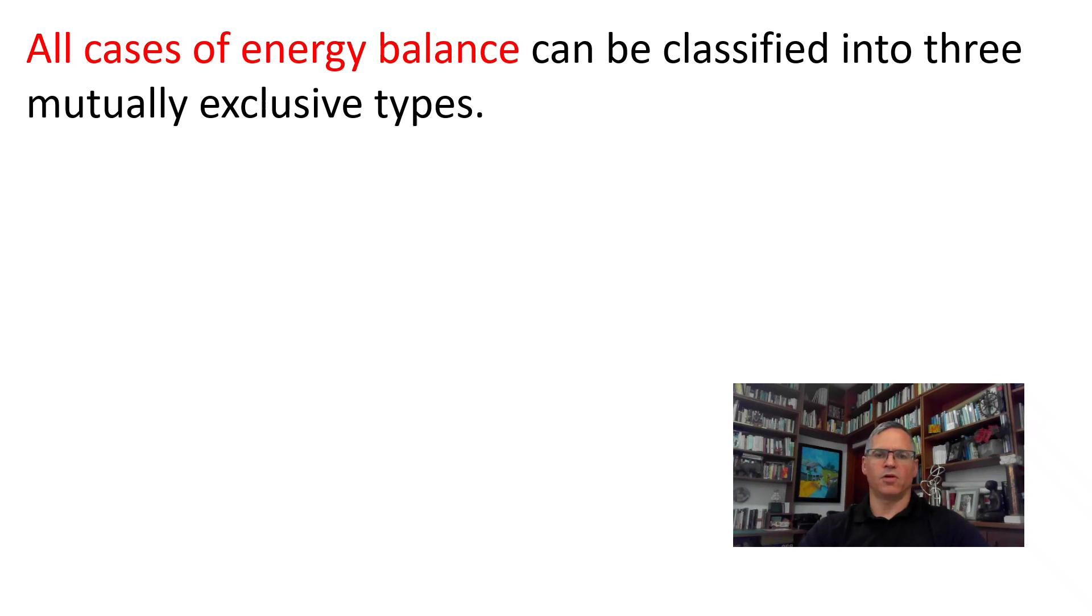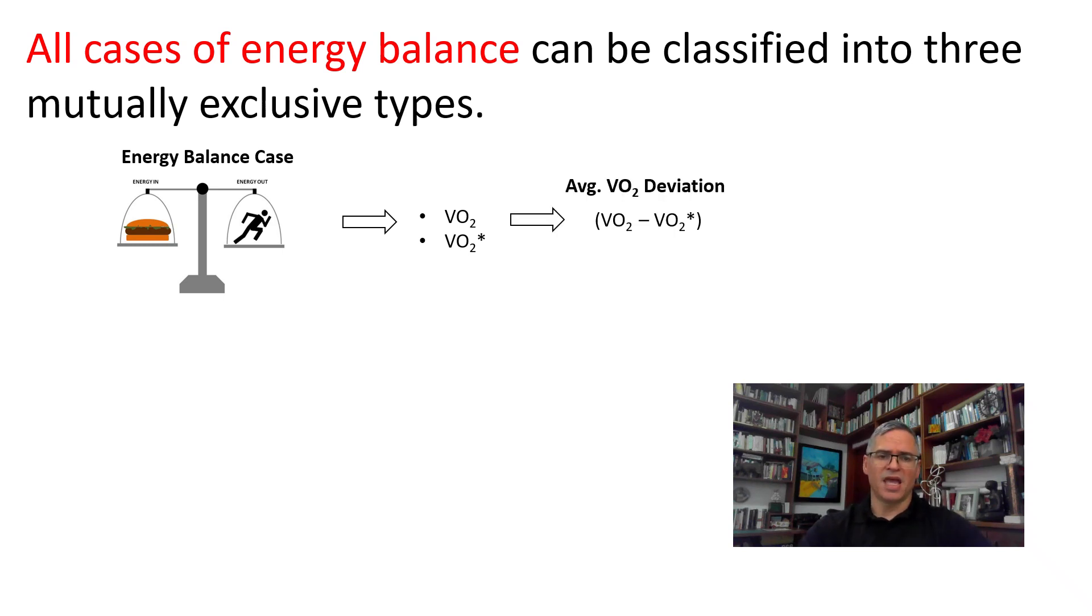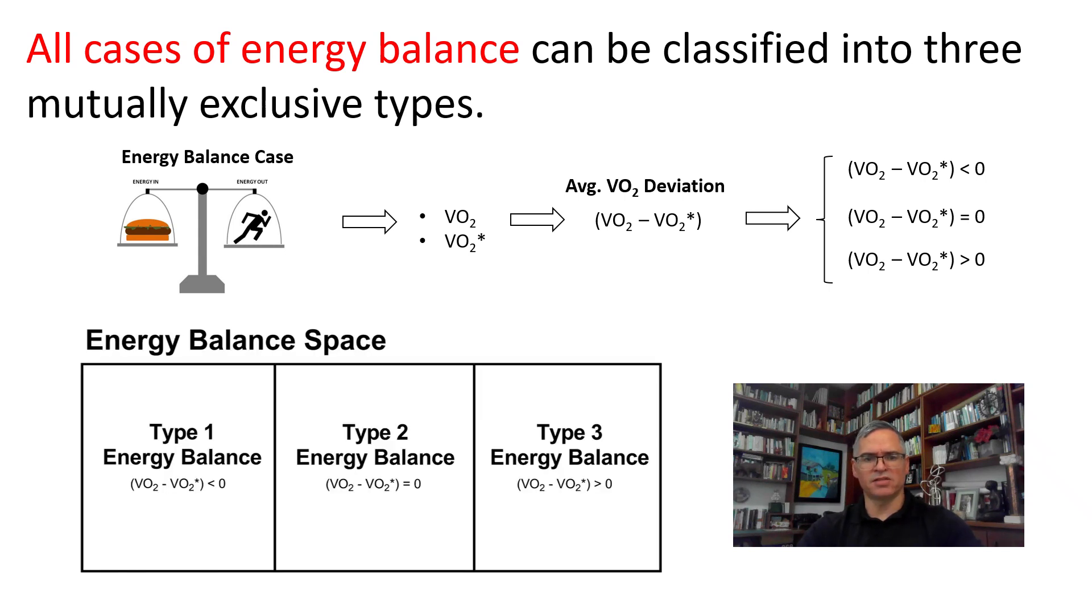Now, we are ready to prove that all cases of energy balance can be separated into three mutually exclusive types. First, note that for each energy balance case, we can measure the daily values of VO2 and VO2 asterisk, which in turn implies that we can assign to each energy balance case an average VO2 deviation. Any deviation is either negative, zero, or positive. Therefore, all energy balance cases can be divided into three non-intersecting sets.